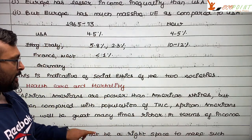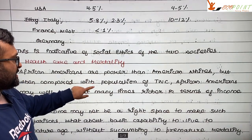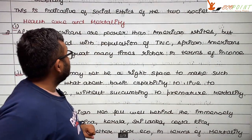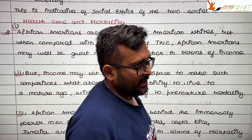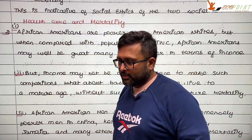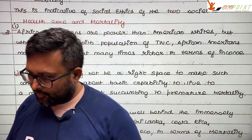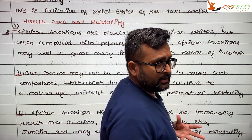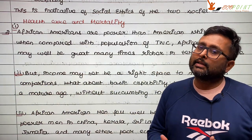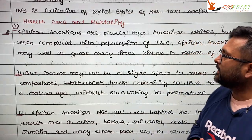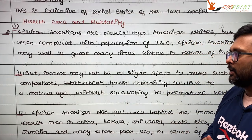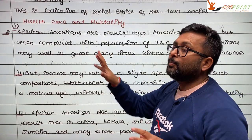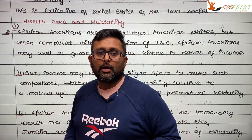That is one way poverty manifests itself. The other example is health care and mortality. He compared African-Americans to other societies. He points out that African-Americans are poorer compared to American whites in the US — this is well established by studies.